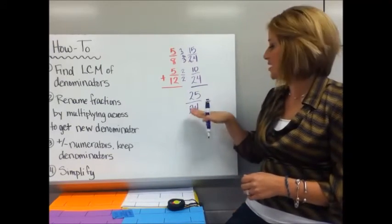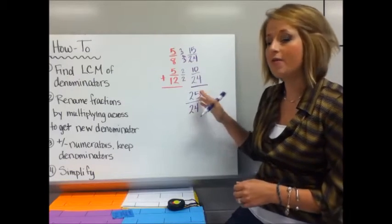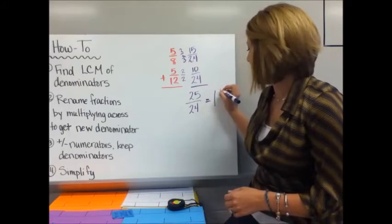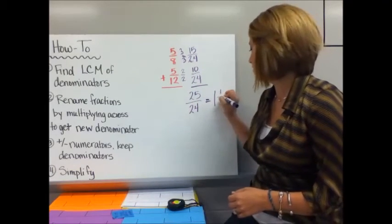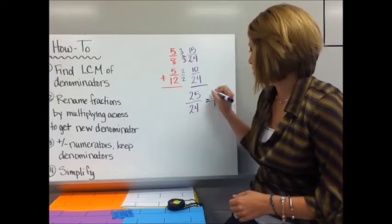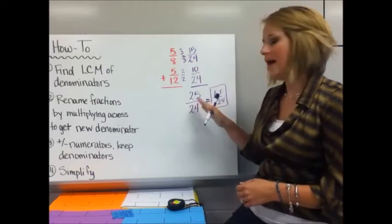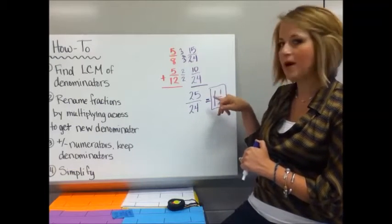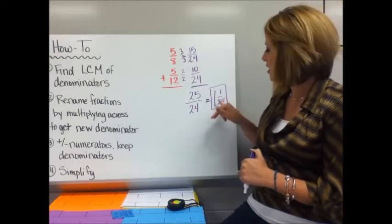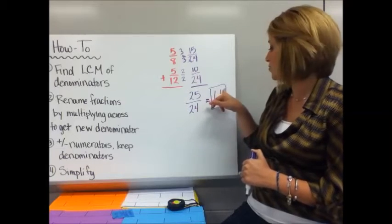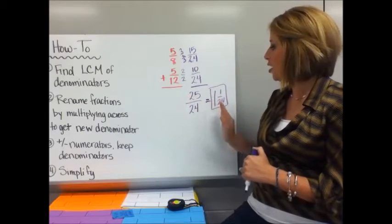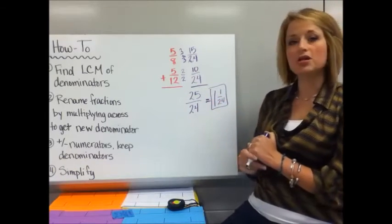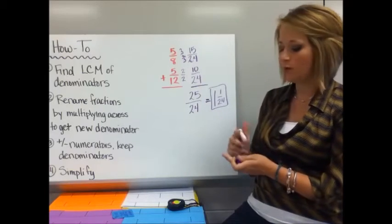So to convert that, I say 24 goes into 25 one time, and I have one left over. I can kind of check to make sure I did that simplifying right by multiplying and going around the world, as we like to call it. 24 times 1 is 24, plus 1 is 25. So those are equivalent numbers, and my answer is 1 and 1/24.